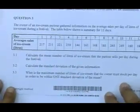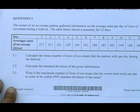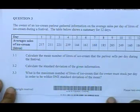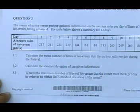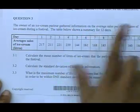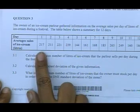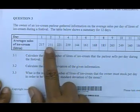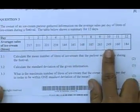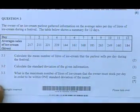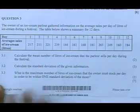The owner of an ice cream parlor gathered information on the average sales per day of liters of ice cream during a festival. He had a festival and was selling ice creams, and the table below shows a summary for 12 days. On day one he sold 217 liters, day two 211, on day 10 he sold 249, on day 12 he sold 185, and so it goes on. They are looking at how many liters this guy sold during the festival.